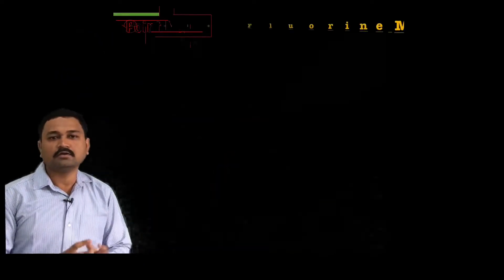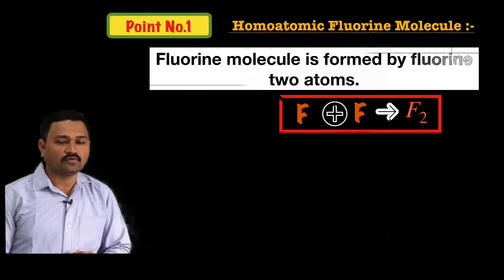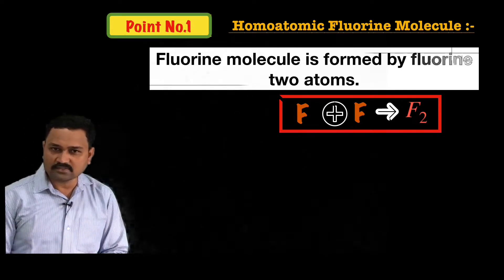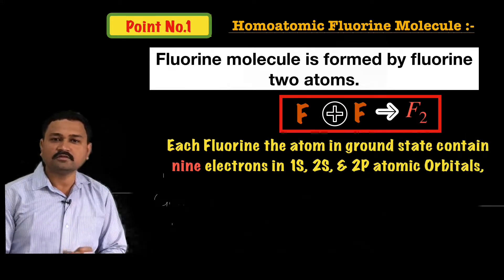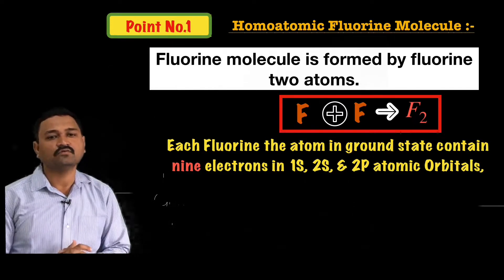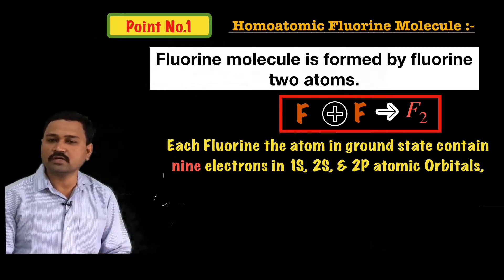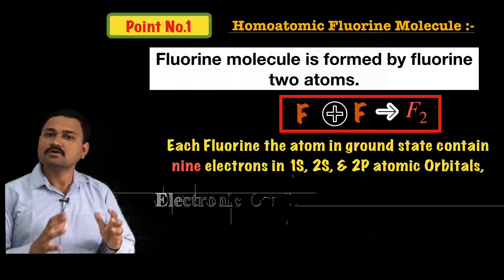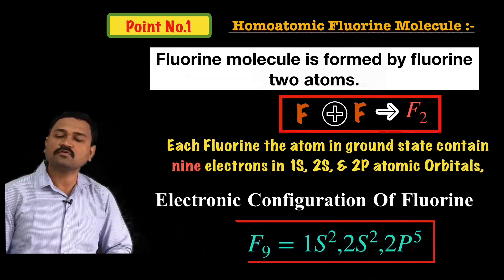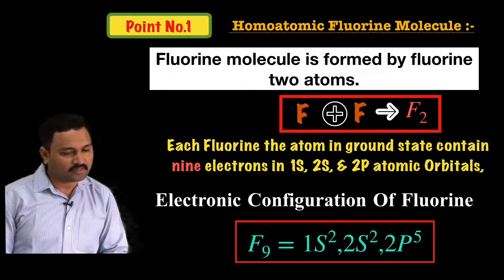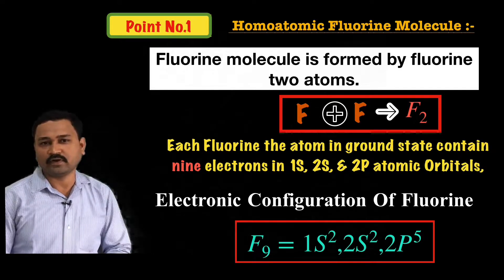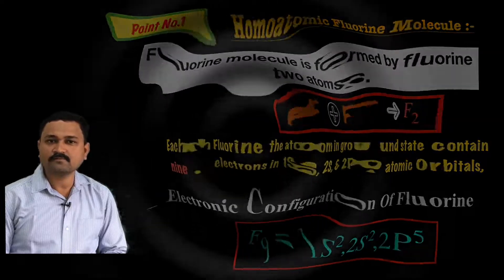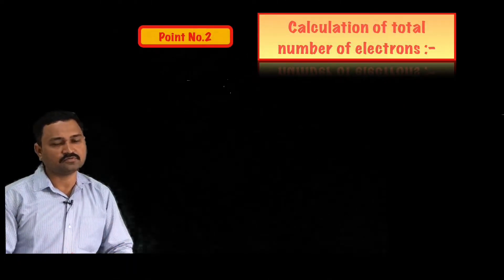Point number one: the fluorine molecule, or diafluorine molecule. We know that fluorine molecule is formed by two fluorine atoms, and each fluorine atom in the ground state contains nine electrons, which are present in 1s, 2s, and 2p atomic orbitals. Fluorine has atomic number nine and its electronic configuration is 1s², 2s², 2p⁵.